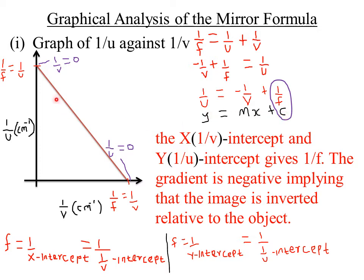For our case, the y-intercept will be at the 1/u-intercept, that is the reciprocal of u. Because we're comparing the mirror formula to a straight line graph, we have to rearrange the mirror formula so that 1/u is the subject of the formula — that is, what is on our y-axis.